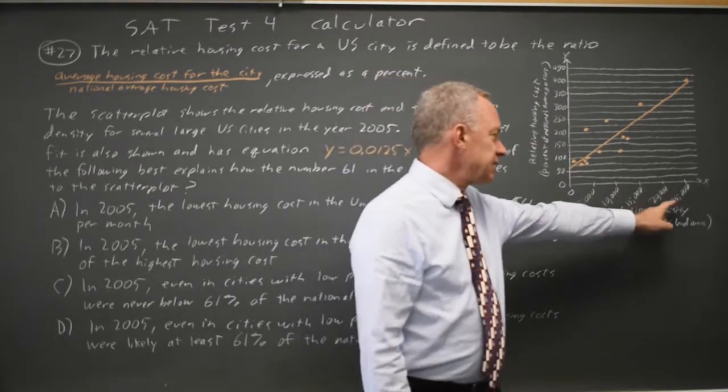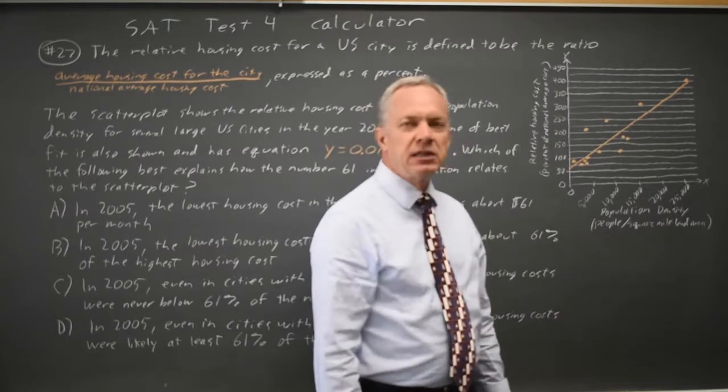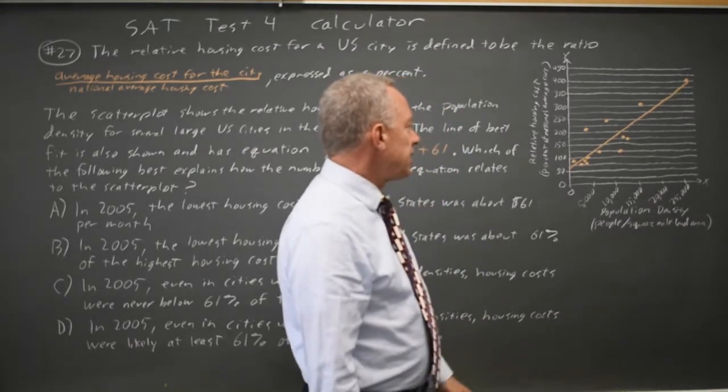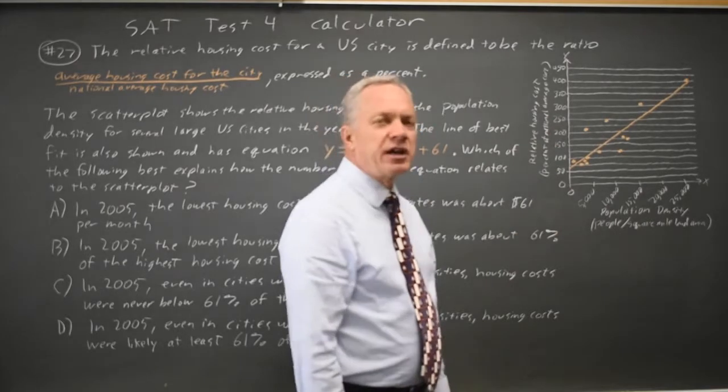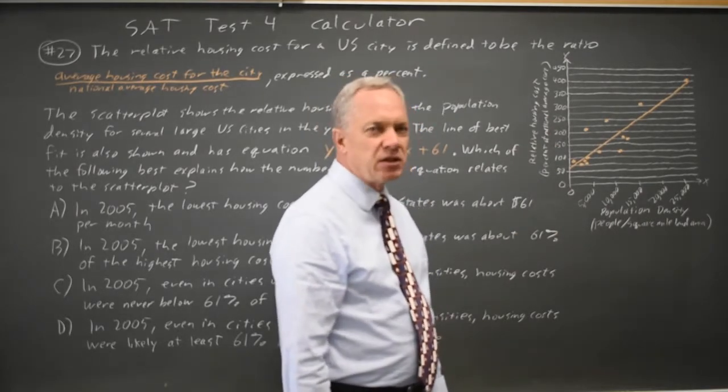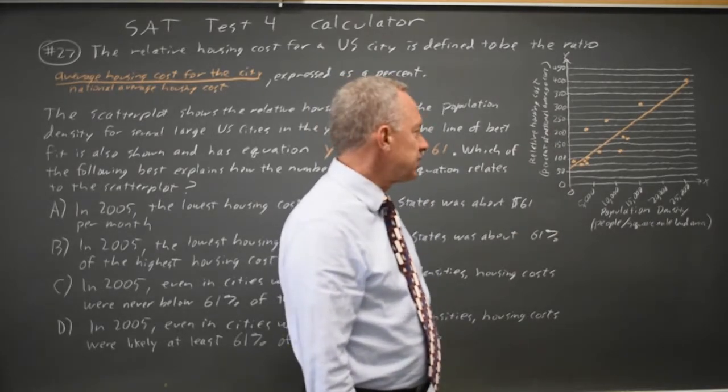The horizontal axis, the x-axis, is population density in people per square mile. The vertical axis is relative housing cost, which is the percent of the national average housing cost.